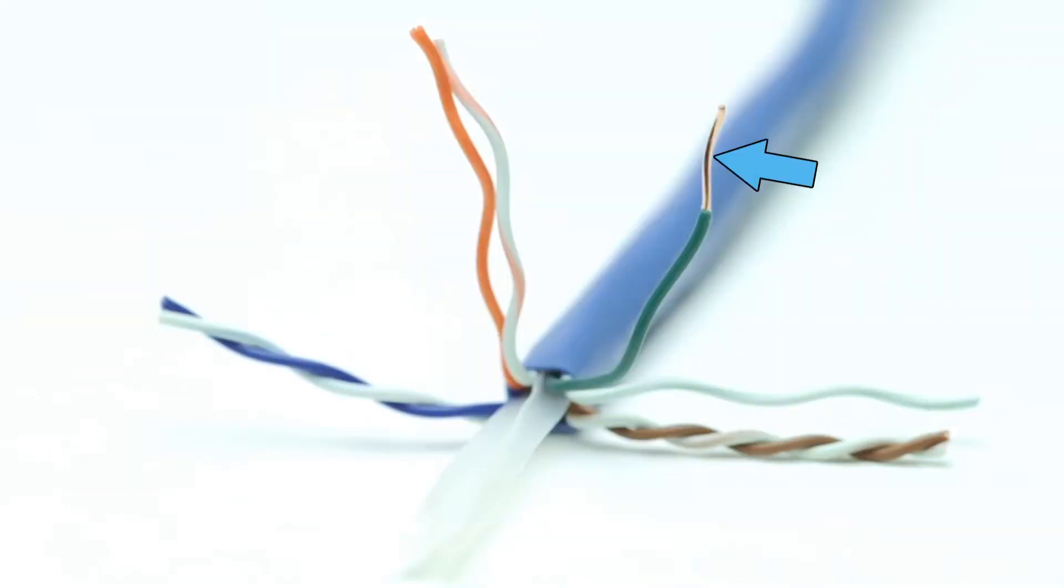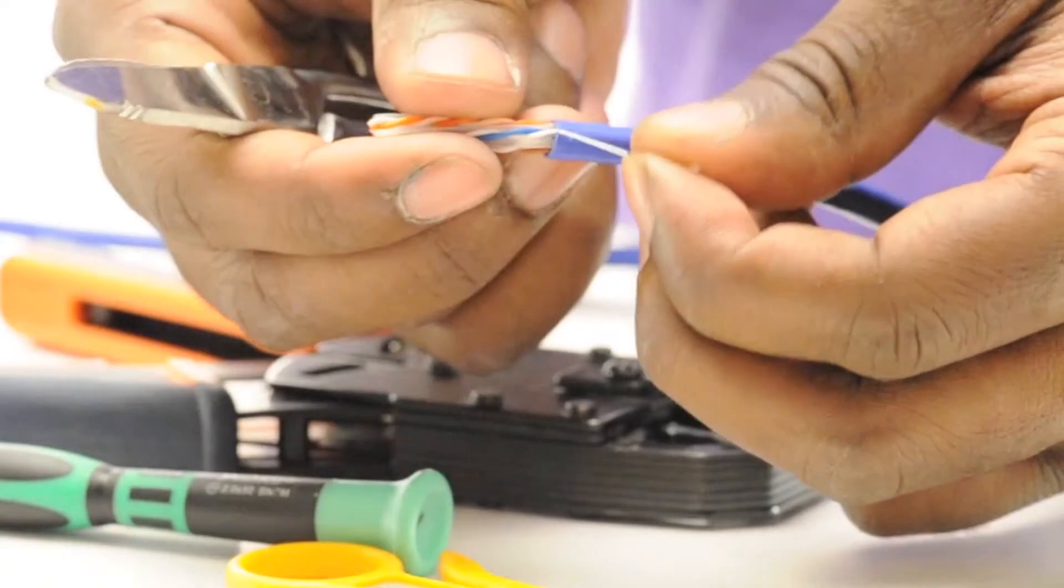The individual wires or conductors are made from 24 wire gauge solid pure copper wire.